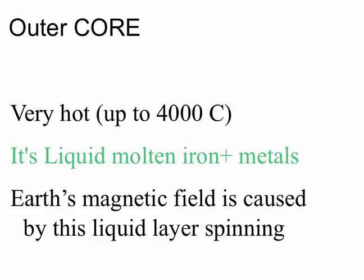Moving outwards, we have the outer core. It's very hot, only up to about 4,000 degrees, and it's liquid iron and metals. It's not enough pressure to turn the iron and other metals like nickel into solid, so it's a liquid. As this liquid is spinning around the solid inner core, it creates the Earth's magnetic field, which is awesome. So we have inner core, then outer core.